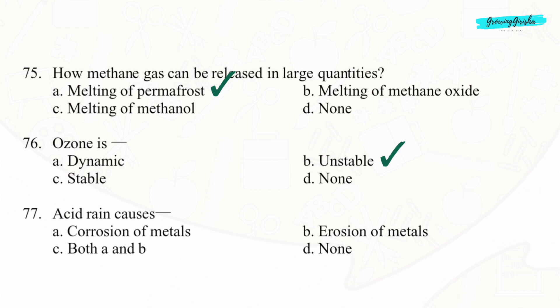Question 77. Acid rain causes Option A: Corrosion of metals.